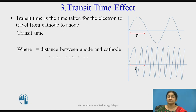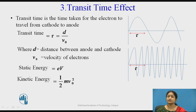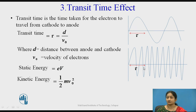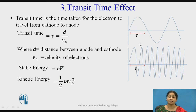Transit time is given by τ = d / v₀, where v₀ is the velocity and d is the distance between the cathode and anode. For high frequency, you can see in the waveform that two cycles are covered during this transit time, compared to a single cycle at low frequency. When considering high frequency, the number of waveform cycles passed is double compared to low frequency, resulting in a phase shift in the signal.